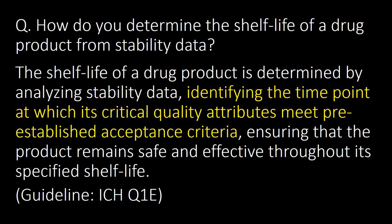How do we determine the shelf life of a drug product from stability data? The shelf life of a drug product is determined by analyzing stability data and identifying the time point at which its critical quality attributes meet pre-established acceptance criteria, ensuring that the product remains safe and effective throughout its specified shelf life. Reference ICH Q1A.